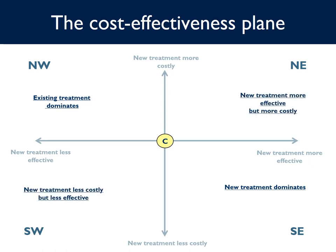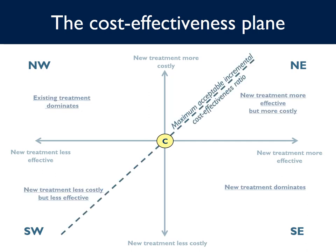You may also have the new treatment being less costly but less effective, as in the southwest quadrant, or more effective but more costly, as in the northeast quadrant. In these two quadrants, the decision is not as straightforward. Either treatment could be chosen, depending on the maximum we are willing to spend or the minimum saving we are willing to accept for a given amount of effectiveness gained or lost. This is represented by the maximum acceptable incremental cost effectiveness ratio line, which could be, for example, £20,000 per QALY gained.